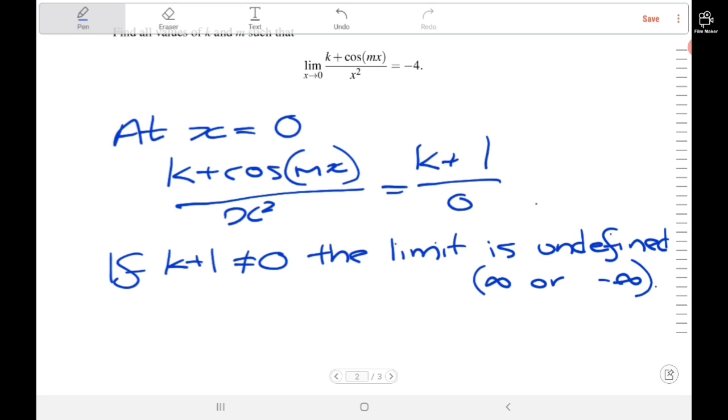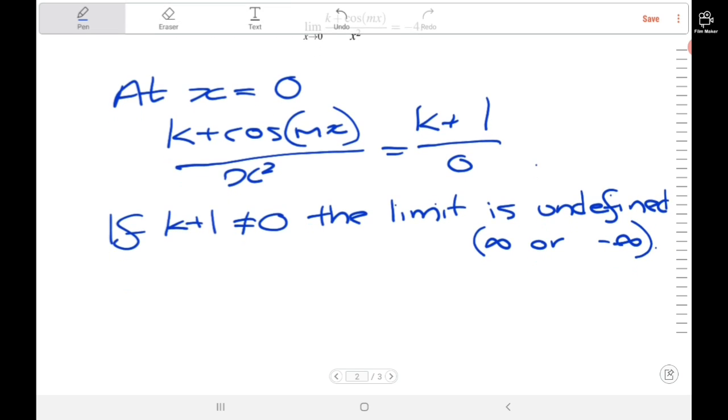If the numerator is non-zero, the limit will be undefined, which means it won't equal negative 4. Since we're looking for this limit to give negative 4, we can assume the numerator is 0. This means that k equals negative 1.